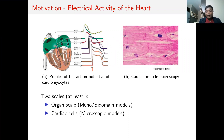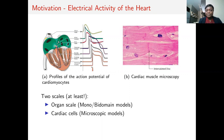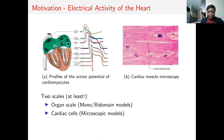Everything starts at the SA node where an electrical signal is generated and propagated to activate the atrium. The signal is then transmitted to the AV node, from where the so-called bundle of His carries and spreads it to the ventricles. This process is called an action potential and is repeated again and again.